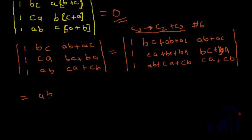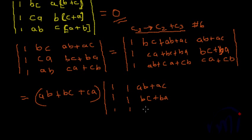That value is AB plus BC plus CA, which is common here. If you take that common, then this becomes 1, 1, and 1, and AB plus AC, BC plus BA, CA plus CB. We have used property number 4 here.